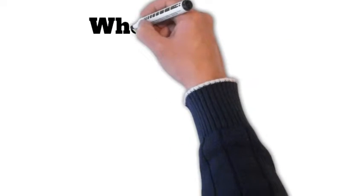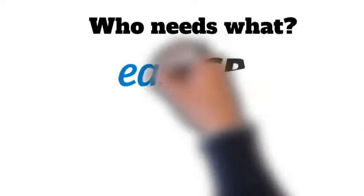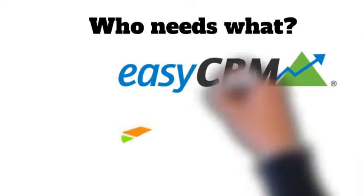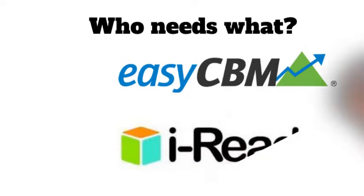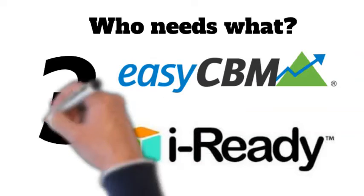Three times each year, all students take a screener called EZCBM for reading and iReady for math. After all students are finished, teachers take a look at the information and make changes to their teaching to best meet student needs. They also determine which students are in need of additional Tier 2 or Tier 3 intervention.